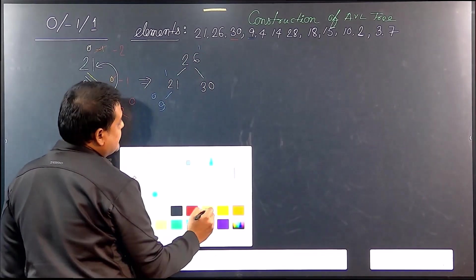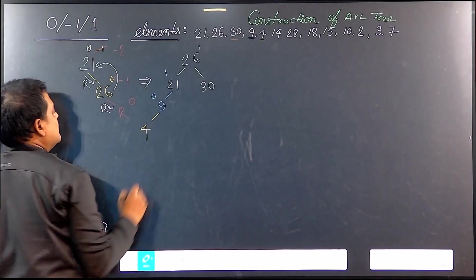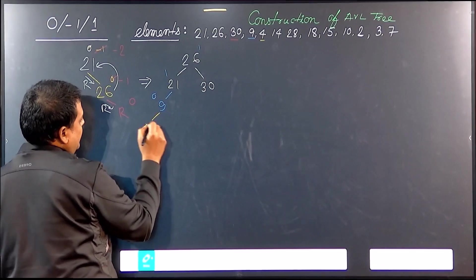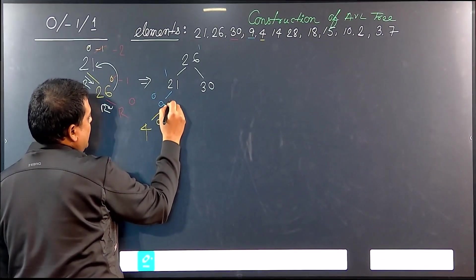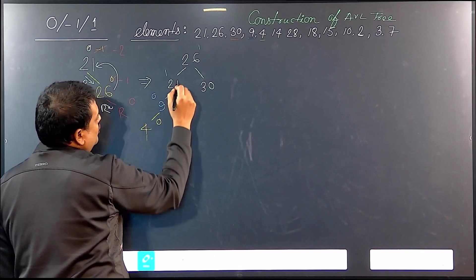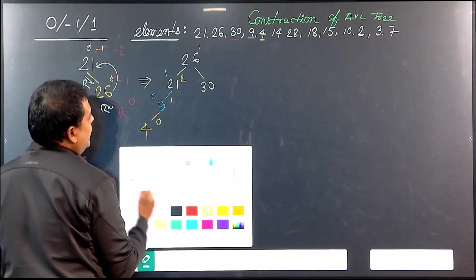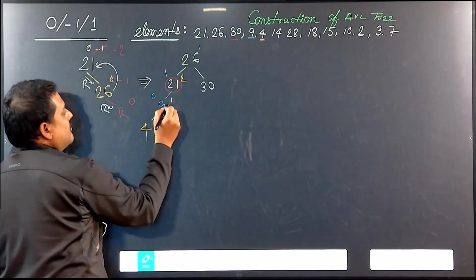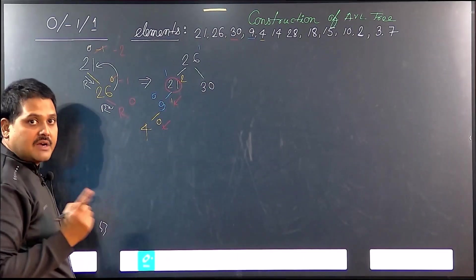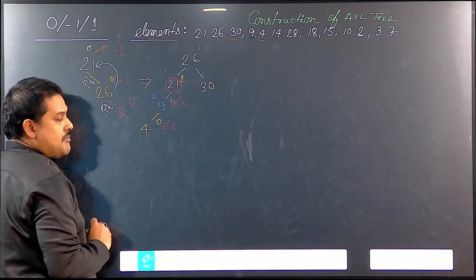The next element is 4. So 4 is inserted to the left of 9. After inserting 4, we calculate the balancing factor. The balance factor for 4 is 0, for 9 it is 1 minus 0 = 1, and for 21 it is 2 minus 0 = 2. So the problem is here at 21. From the problem node, we go towards the inserted element — this is a left-left imbalance.